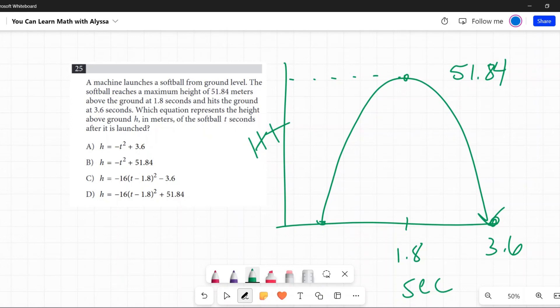Which equation represents the height above the ground h in meters of the softball t seconds after it has launched? So height is h, that's our h, and then seconds is going to be represented by t for time.